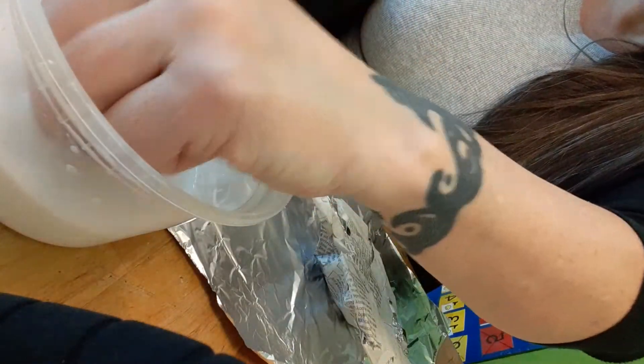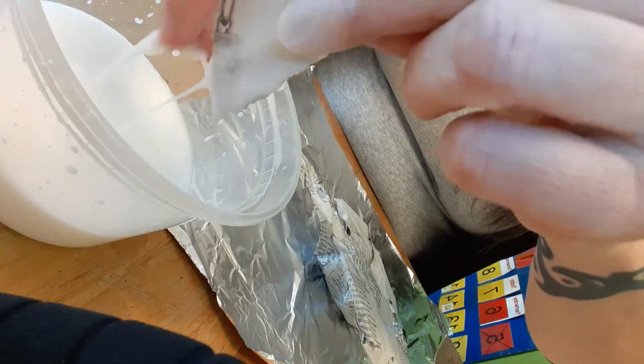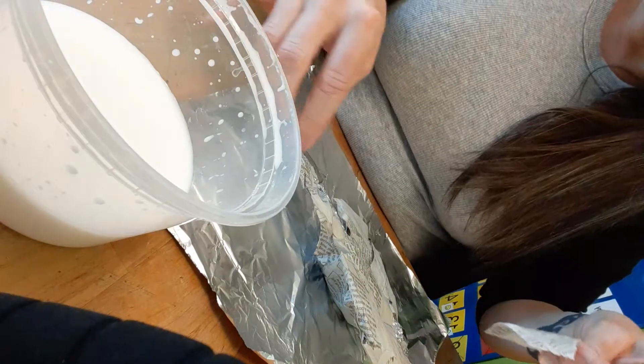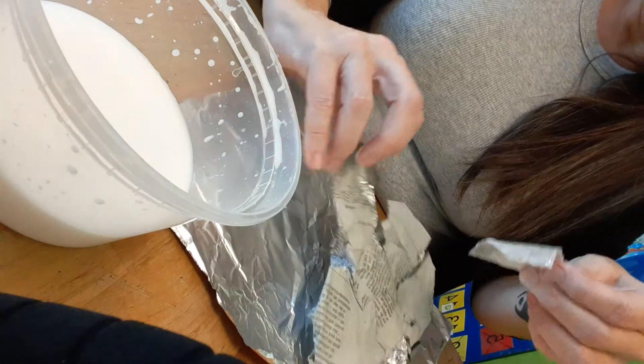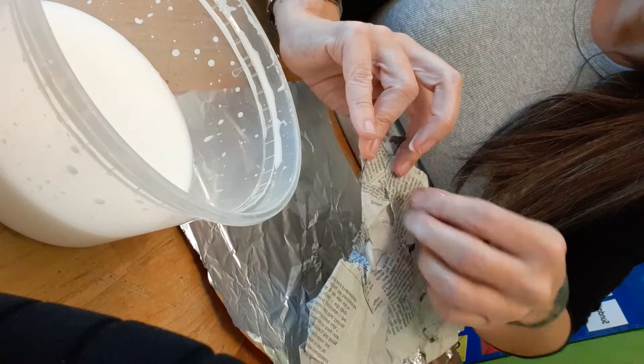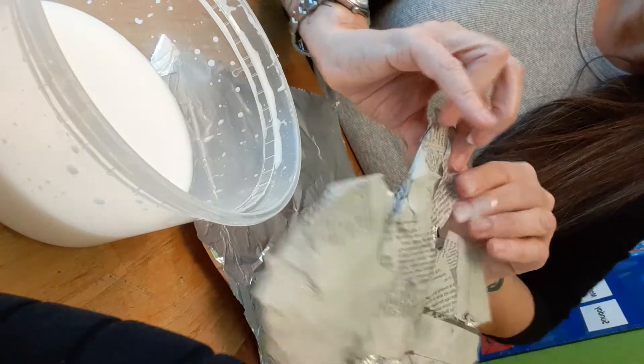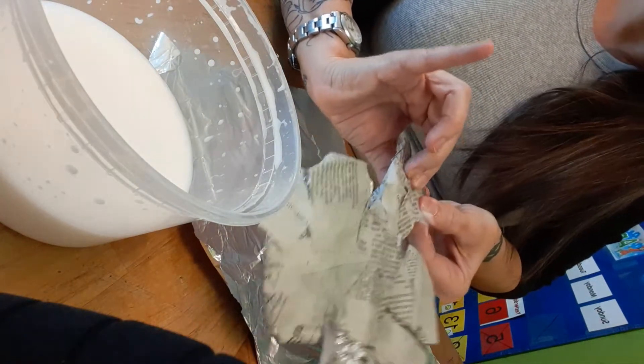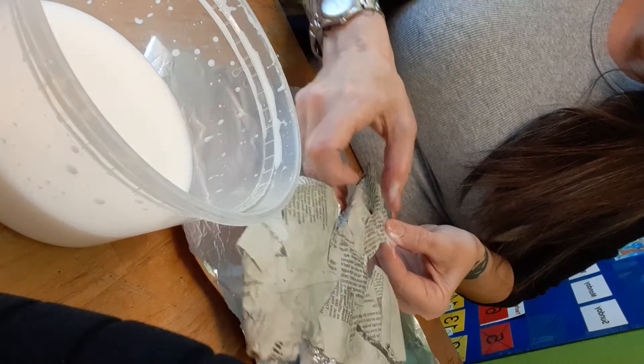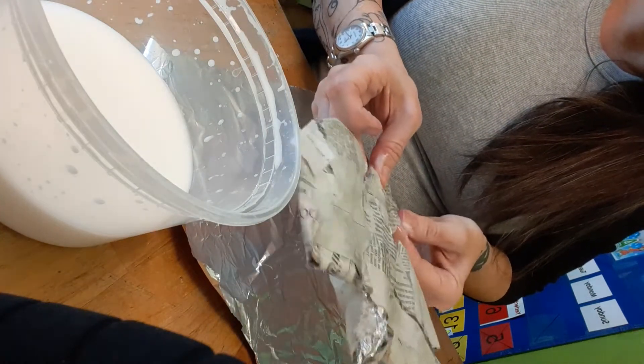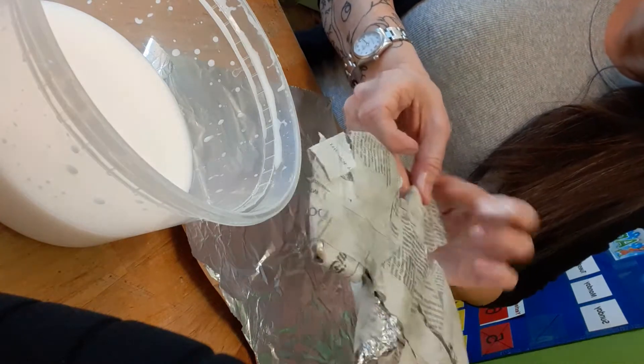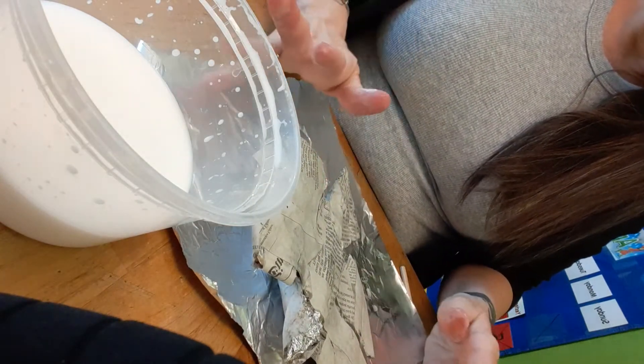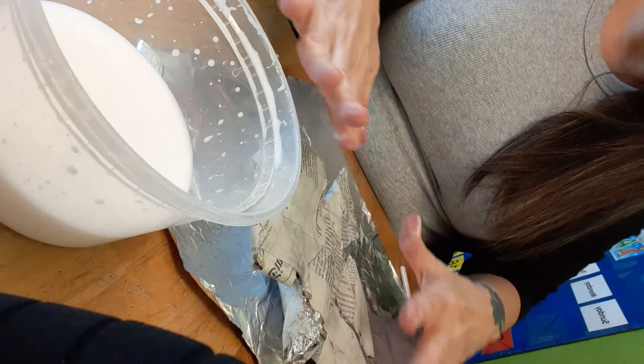I'm going to dip it in the glue. Once you get enough newspaper on—what I discovered last time is it doesn't stick so well to the foil, so you kind of have to layer it all on top and let that dry.